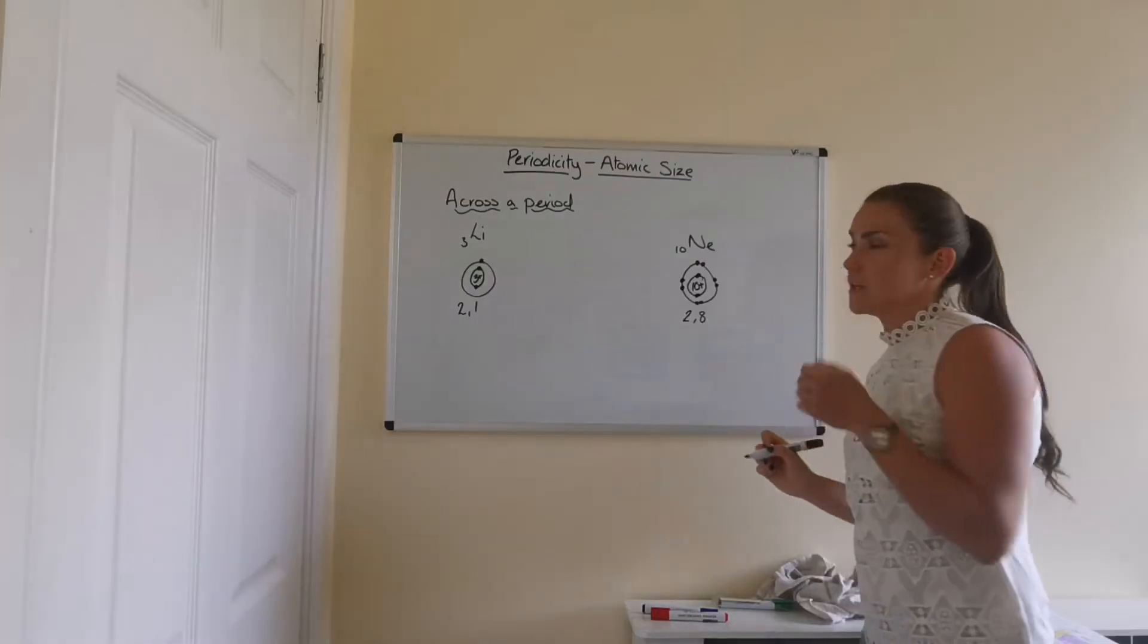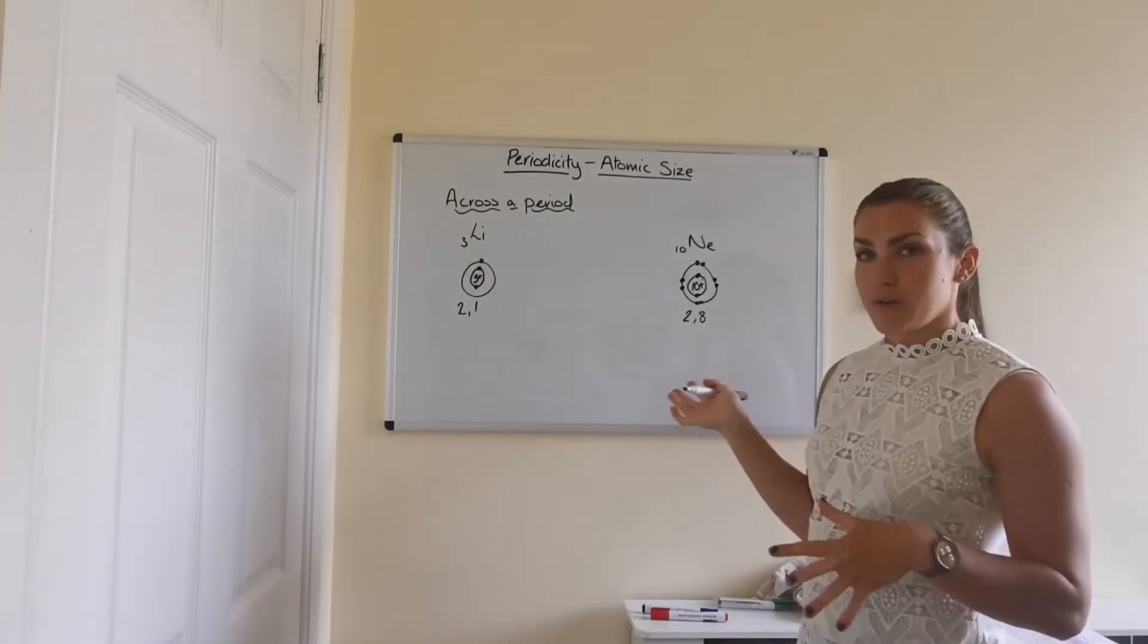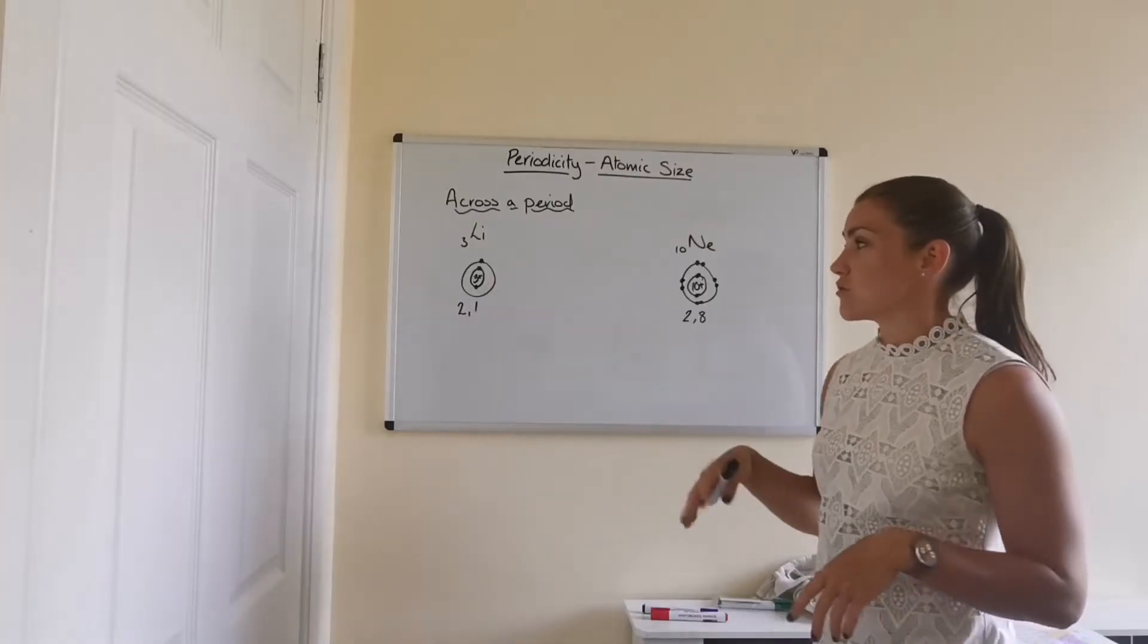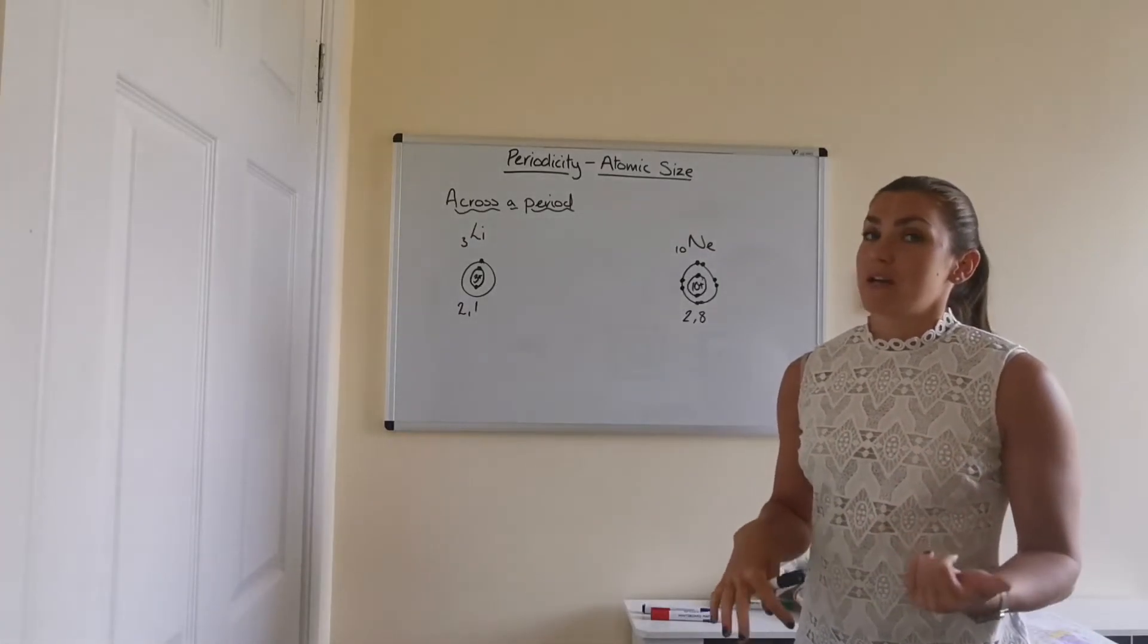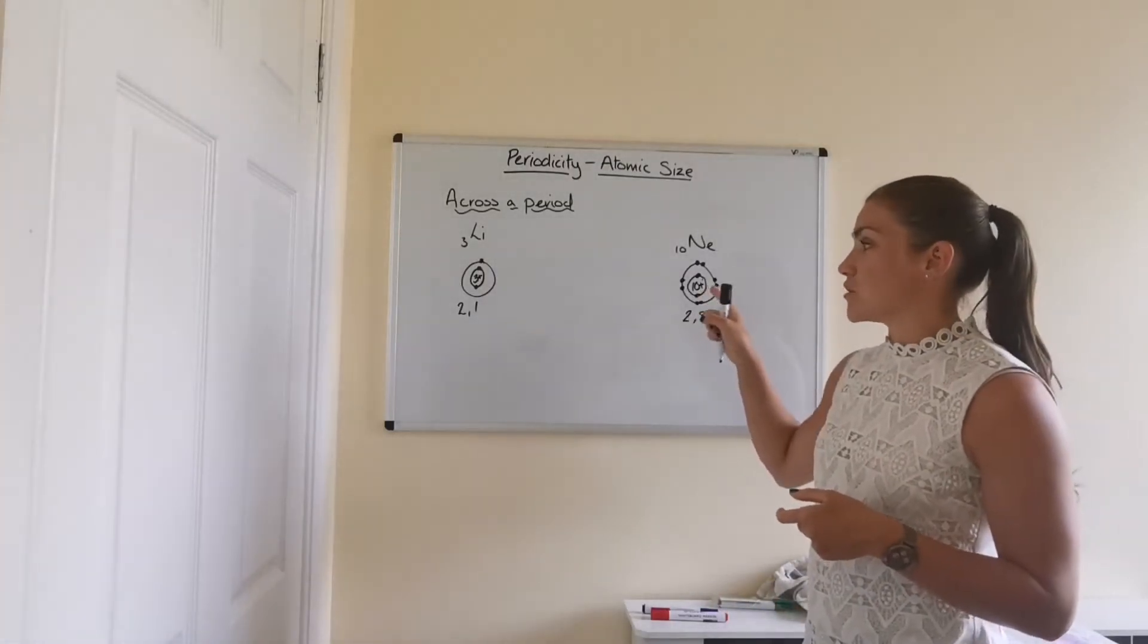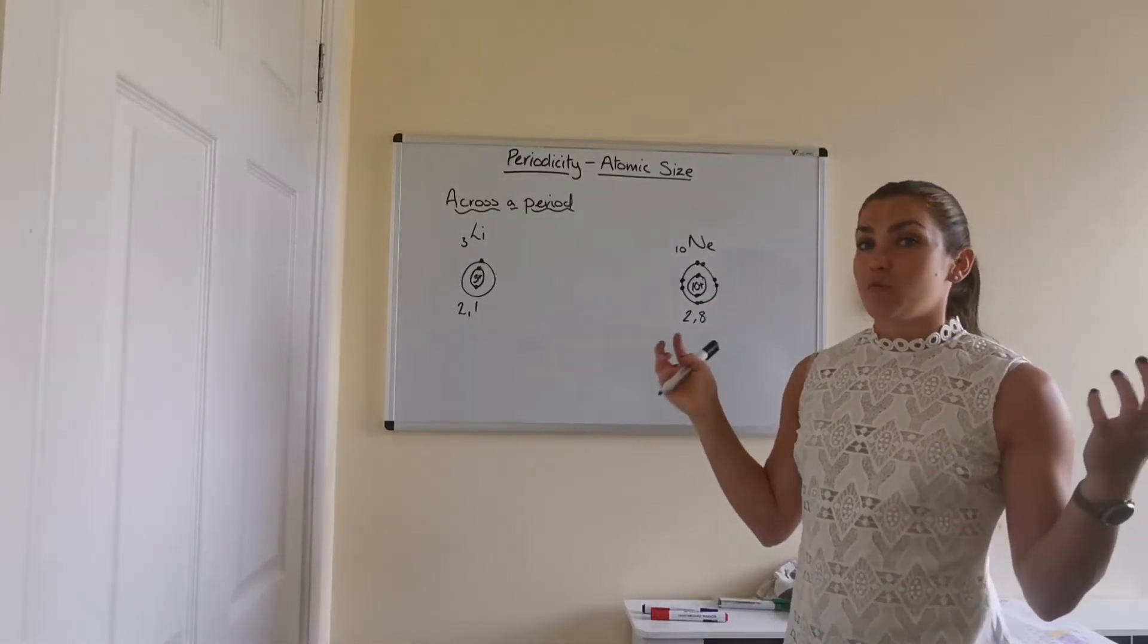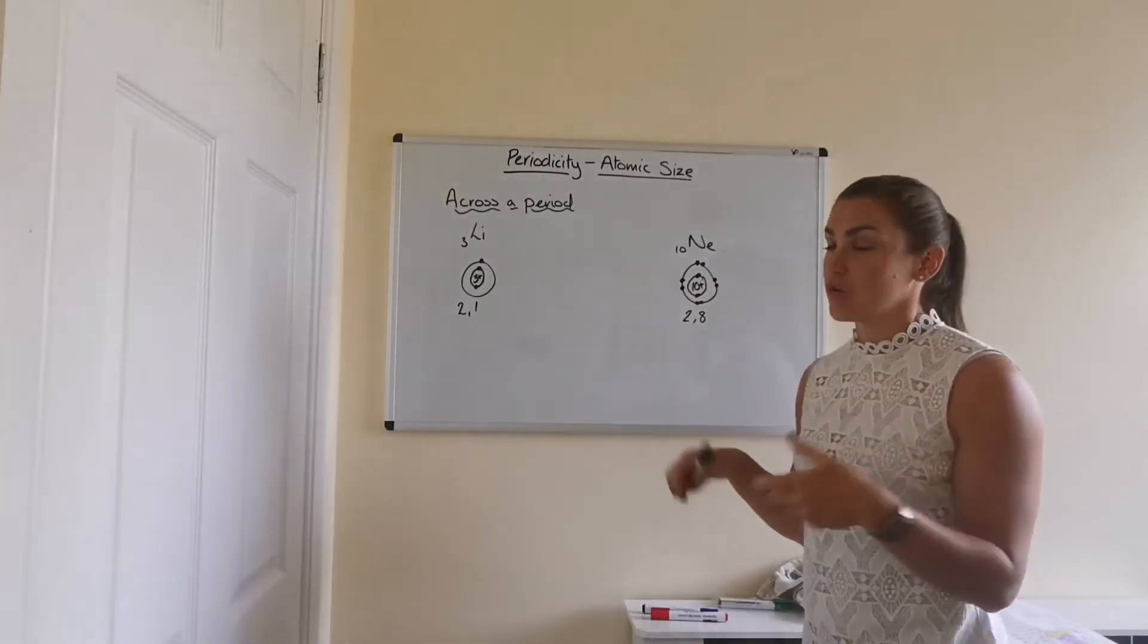So if we're looking at the size of these atoms, they both have the same number of occupied electron shells. So they both only have two filled electron shells. So in that respect, they should really be about the same size. However, neon, because it's got a much bigger nuclear charge, and by that I mean there's more protons in the nucleus, that will pull these negative electrons in closer, so it actually makes it smaller.